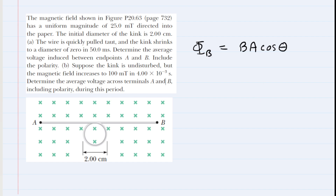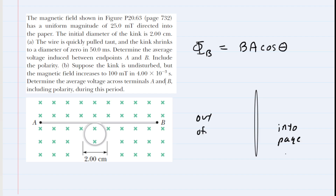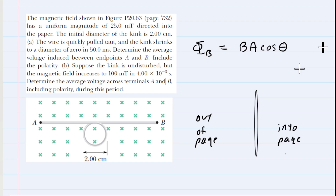Let's draw the loop from a slightly different perspective — edge on like this. This side of the loop goes into the page, and the other side would be out of the page. The question indicates, both in the text and in the picture, that the magnetic field vectors are pointing into the page. You can see those green crosses — crosses indicate a vector directed into the page. So our magnetic field is pointing into the page.